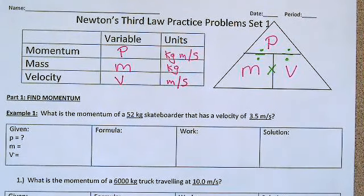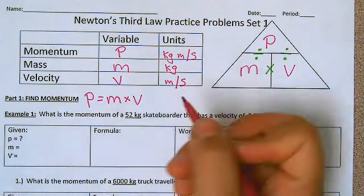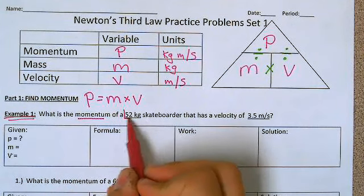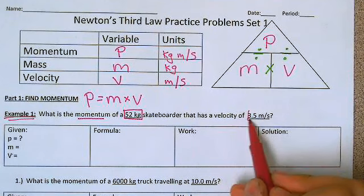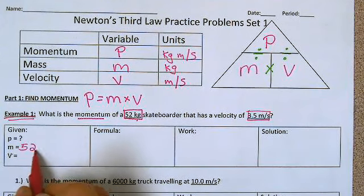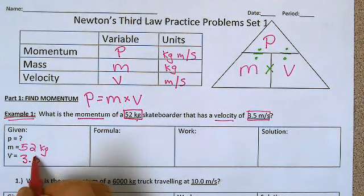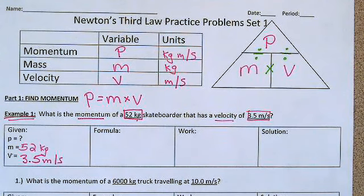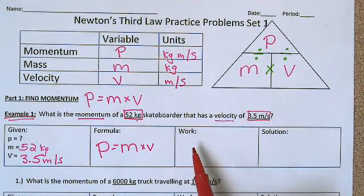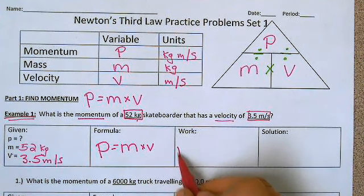For part one of this worksheet we're looking for momentum, so we're using the formula momentum equals mass times velocity. Let's do example number one together. It says: what is the momentum of a 52 kilogram skateboarder that has a velocity of 3.5 meters per second? The 52 kilograms is the mass, so I'm going to put that with the M, and the velocity is 3.5 meters per second, so that goes with the V. We're going to show our work by plugging the values from the word problem into our formula.